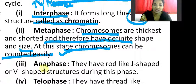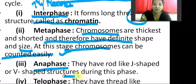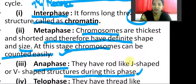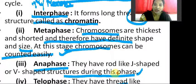Next is anaphase. In the anaphase stage, chromosomes have rod-like, J-shaped, or V-shaped structures during this phase. Next is telophase, where the chromosomes have thread-like structures.